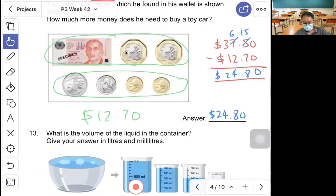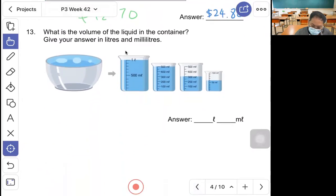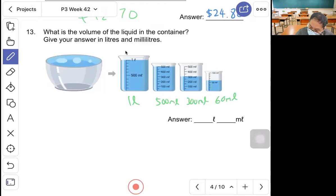Question 13, what is the volume of the liquid in the container? Let's count: this is 1 liter, 500 ml, 300 ml. Here is 10, 20, 30, 40, 50, 60 ml. Add together, answer is 1 liter 860 ml.